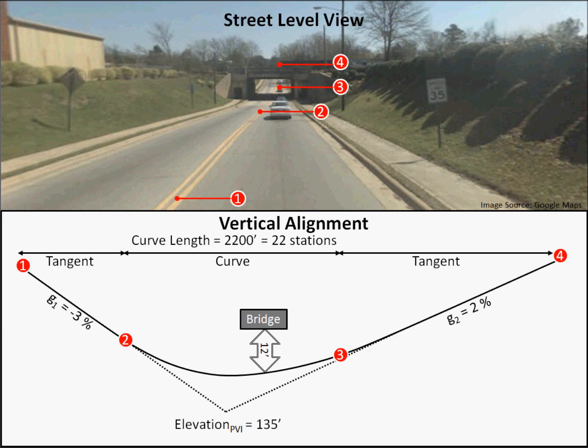A grade of negative 3% leads into the curve, and a grade of 2% follows the curve. The point where the tangents meet, known as the point of vertical intersection, or PVI, has an elevation of 135 feet.